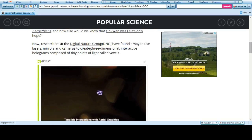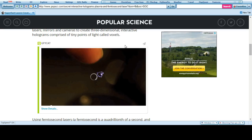Now researchers at the Digital Nature Group, DNG, have found a way to use lasers, mirrors, and cameras to create three-dimensional interactive holograms comprised of tiny points of light called voxels, V-O-X-E-L-S.